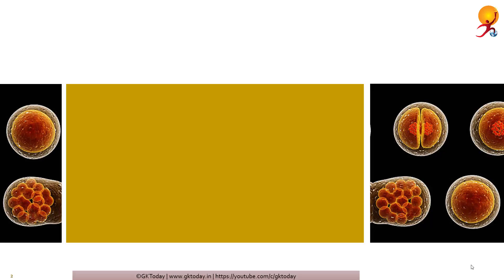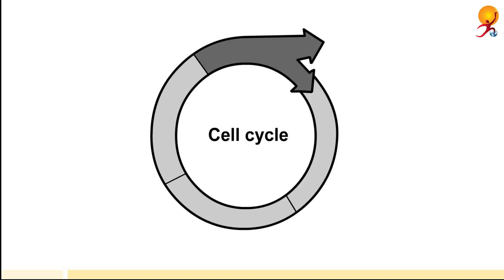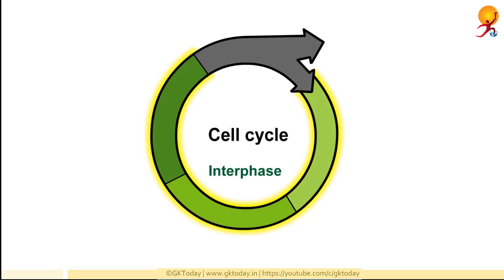The first thing we come to is mitosis. Actively dividing cells pass through a series of steps known as the cell cycle. There are two main phases in this cell cycle. The first is interphase, that portion of the cell cycle in which the cell simultaneously carries out its work and in preparation for division duplicates its chromosomes. Second, there is the mitotic phase or M phase, that portion of the cell cycle that includes both mitosis and cytokinesis.